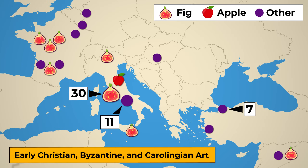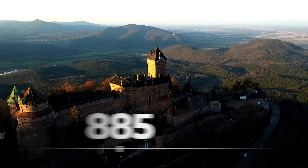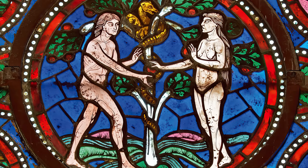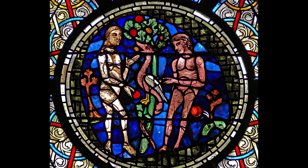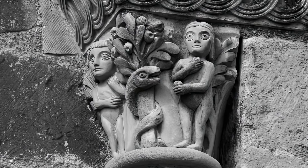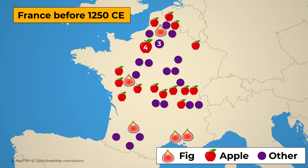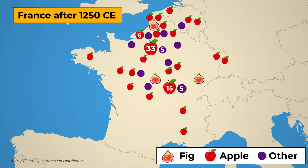The apple didn't become popular until many centuries later, starting in the 12th century in France. Round apple-sized forbidden fruit started appearing in stained glass windows and carvings in churches all across France. Prior to 1250 CE it was just one of several options, but after this turning point the apple totally dominated.